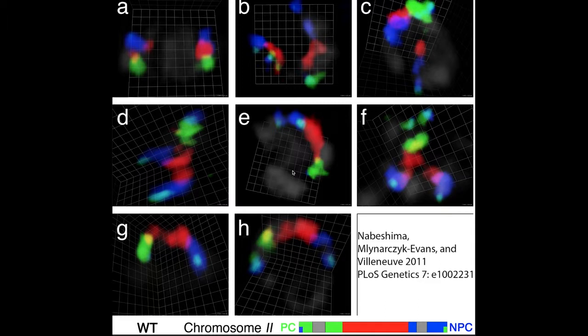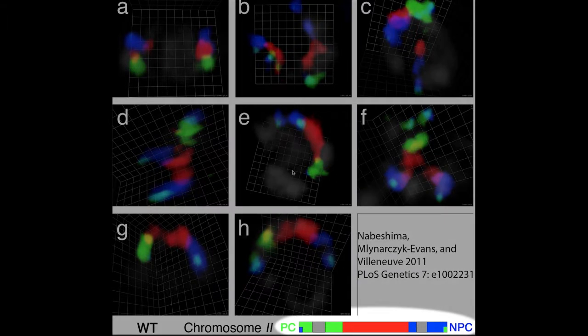Based on experiments involving chromosomes that have some of their regions deleted, duplicated, or rearranged, it is generally thought that one end of each meiotic chromosome in C. elegans is involved in homolog recognition and the initiation of pairing. This end is referred to as the pairing center or homolog recognition region. The precise sequences or structural features that comprise a pairing center are not known. Pairing centers have also been proposed for meiotic chromosomes in Drosophila, and it is likely that something similar occurs for meiotic chromosomes in most or all eukaryotes, but this is not known.